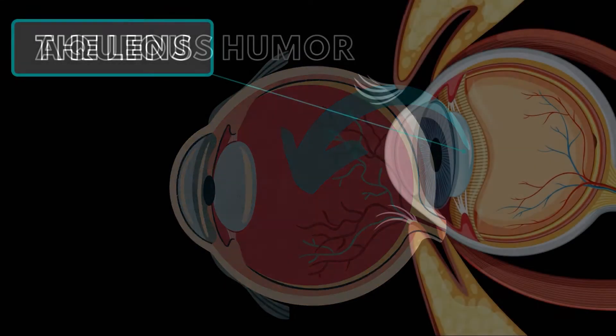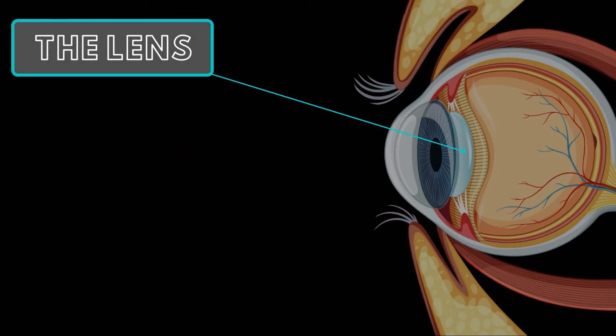The lens is a transparent, flexible structure located behind the iris. It plays a vital role in focusing light onto the retina. The shape of the lens is controlled by the ring-shaped ciliary muscles, which will contract or relax to change the shape of the lens. Changing the curvature of the lens allows for near and distant vision.